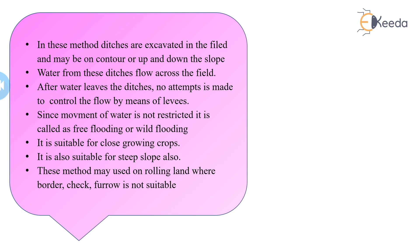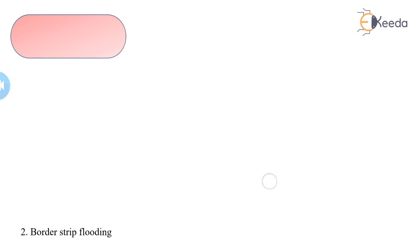In wild flooding, there is no restriction on the movement of water and no control of discharge. Once the water reaches the lower end or covers the entire surface of the plot, only then is the water supply stopped. This method is also called strip flooding.